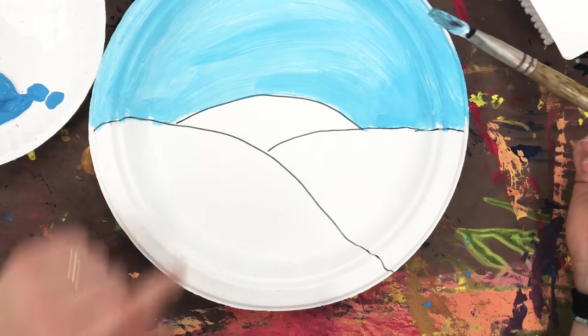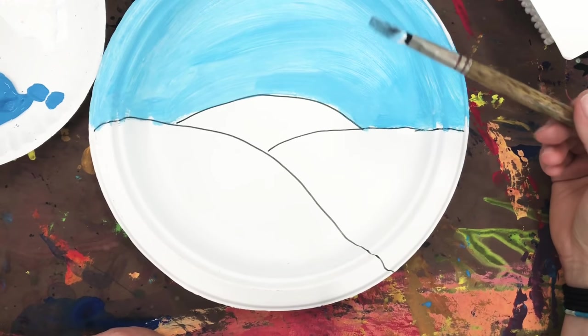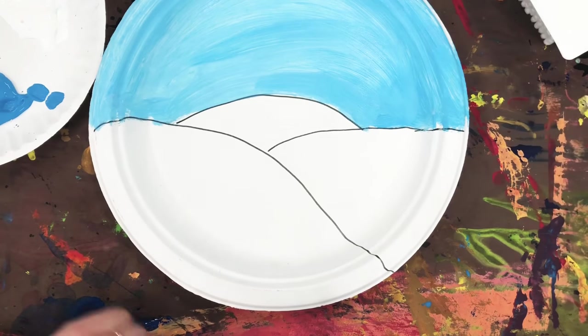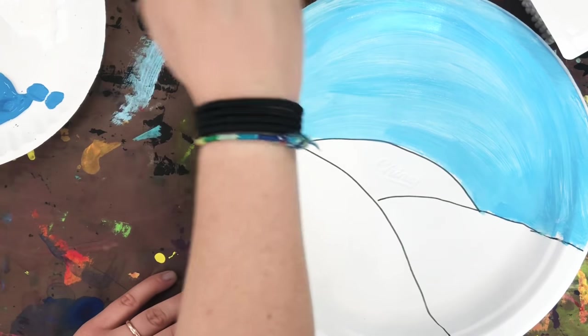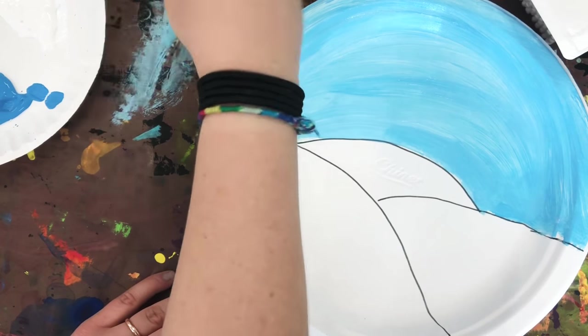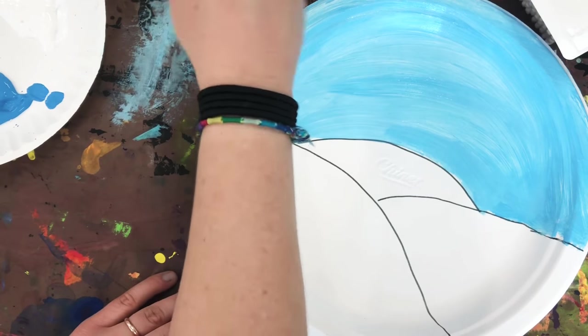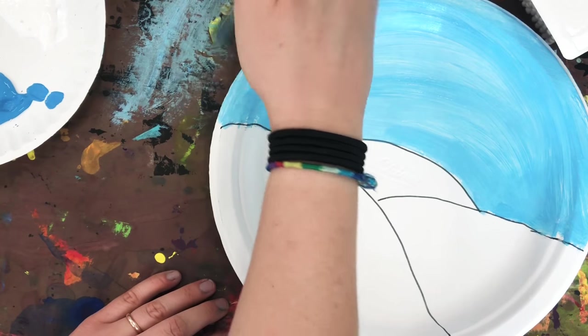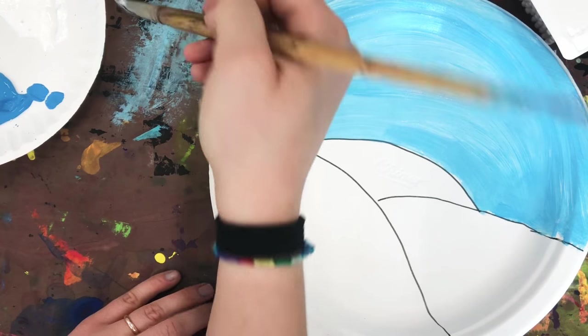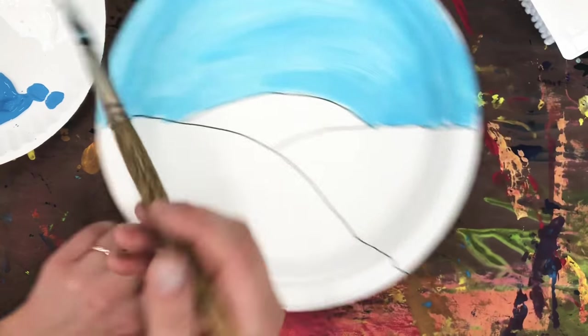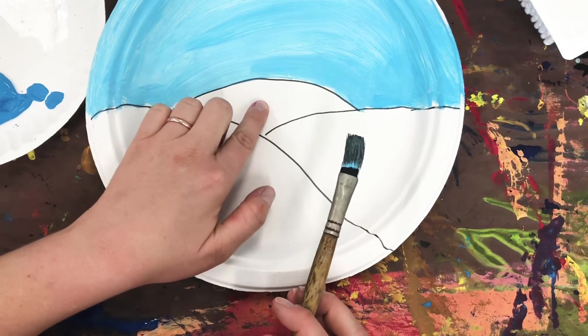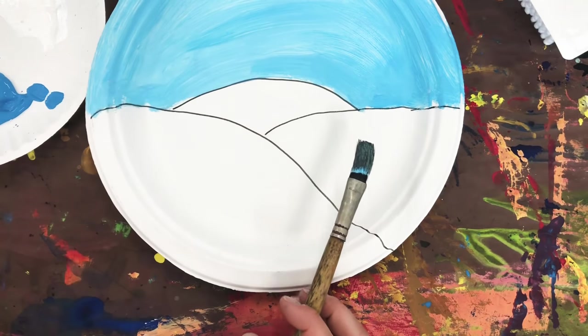Alright, so now I'm going to get ready to paint my hills. My hills are going to be green. To clean my brush, I'm just going to wipe it on my messy mat until I get most of the paint off. It's okay if there's still a little bit of blue, because green is half blue anyway. So we'll get it mostly clean, and then I'm going to start by painting this hill in the background.